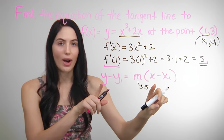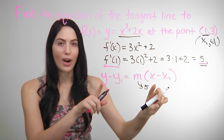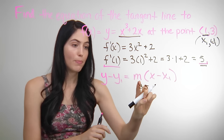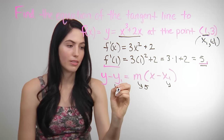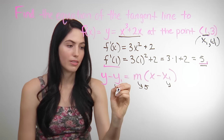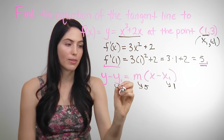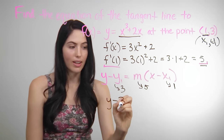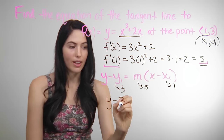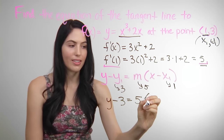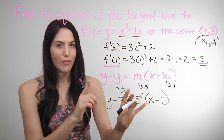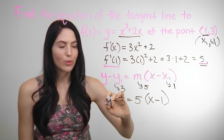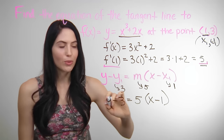You want an equation for the tangent line, which means you need to leave an x variable and a y variable in it. You can go ahead and write your equation by plugging in values for m, for x1, and for y1. Your x1 is 1, your y1 is 3. So your equation is y minus 3 equals 5 times parenthesis x minus 1. This is a correct answer.